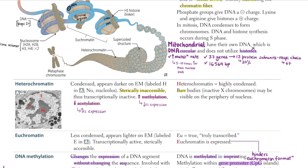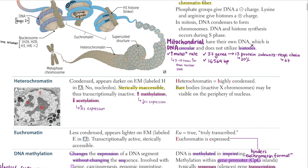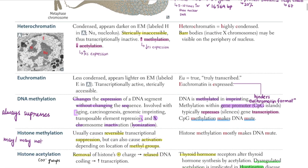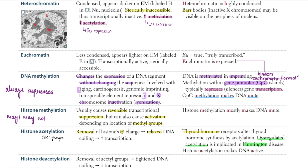Everything on this page is interlinked. Heterochromatin is described as sterically inaccessible — spatially inaccessible — meaning transcription proteins cannot bind there, so no transcription happens. There is increased methylation and decreased acetylation in heterochromatin. DNA methylation always suppresses transcription, which is why heterochromatin has increased methylation — it decreases expression of the DNA.